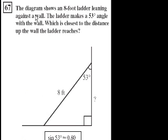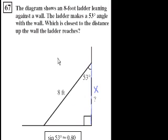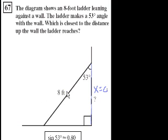Problem 67. The diagram shows an 8-foot ladder leaning against the wall. The ladder makes a 53-degree angle with the wall. Which is closest to the distance up the wall the ladder reaches? So this is what they care about — this distance right here. We have SOHCAHTOA. This deals with the hypotenuse, which is 8, and deals with this adjacent side. So what trig function deals with the adjacent side and the hypotenuse?